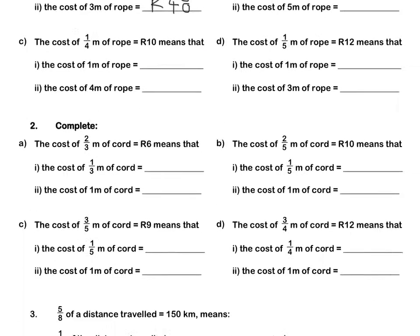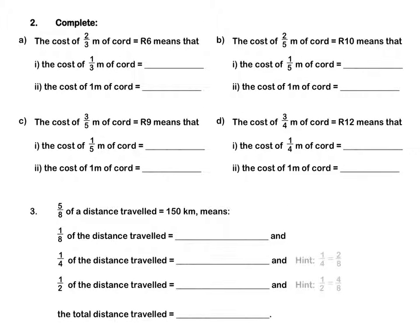Question 2. The cost of 2 thirds of a metre of rope is 6 rand. This means that the cost of one third of a metre of rope will be 3 rand. One third of a metre is half of two thirds of a metre, therefore we divide our cost by 2.